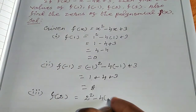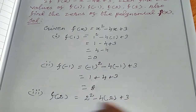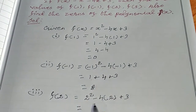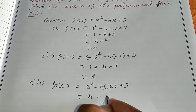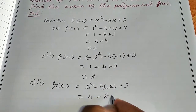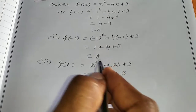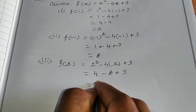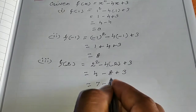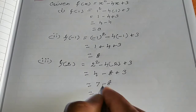Next, find f(2). Apply x equals 2. f(2) = 2 squared minus 4 times 2 plus 3, which equals 4 minus 8 plus 3, which equals 7 minus 8. So f(2) = minus 1.